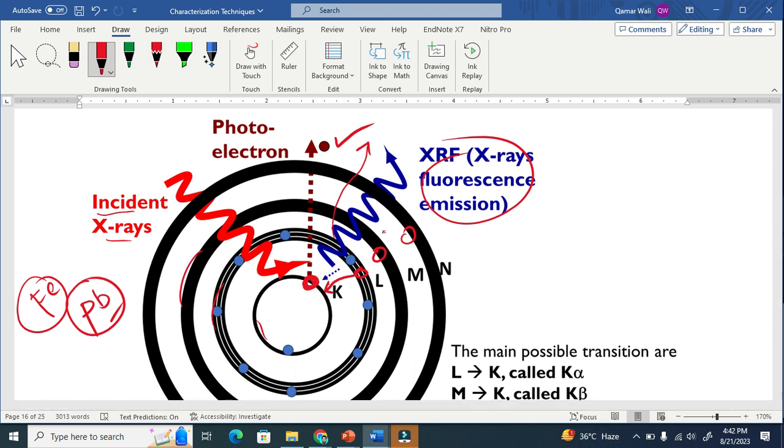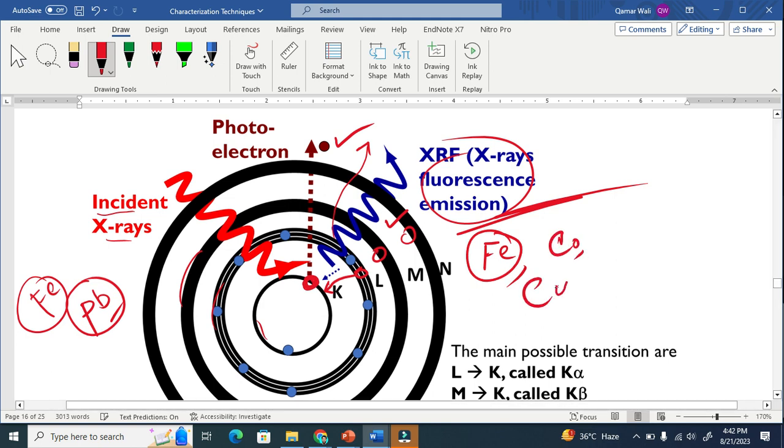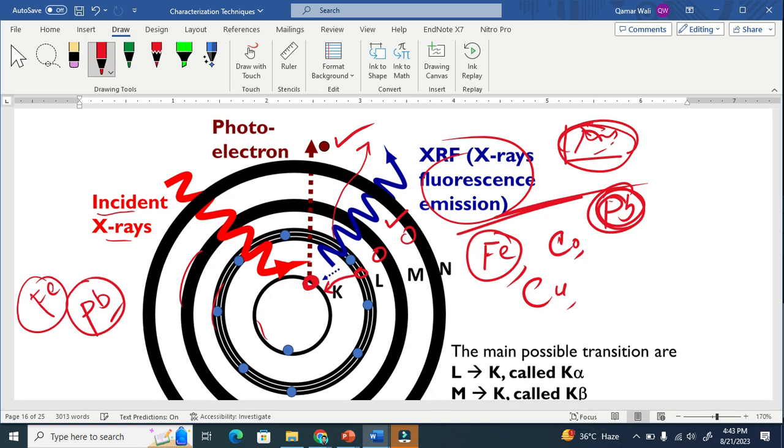This is the characteristic of the element. This is why it gives us the element information that iron exists, cobalt exists, copper exists, and moreover any element exists because every element has characteristic X-rays. Just like we know that in XRD we have the pattern like the fingerprint of a human being, so from that pattern we know every compound. Here from this XRF, the fluorescence X-ray, we know which element exists.